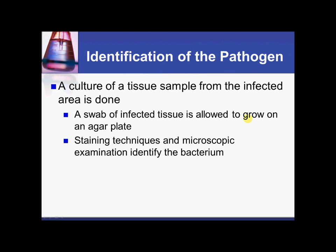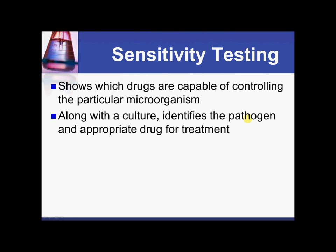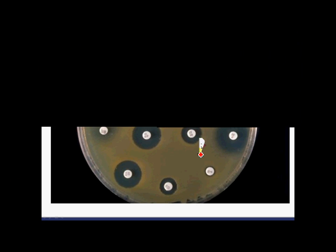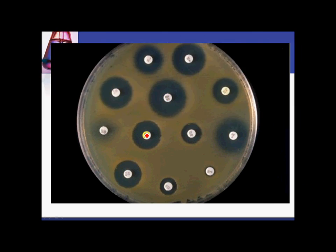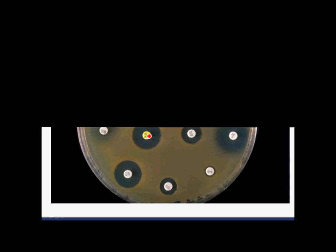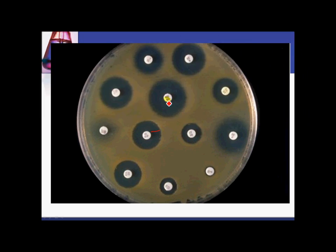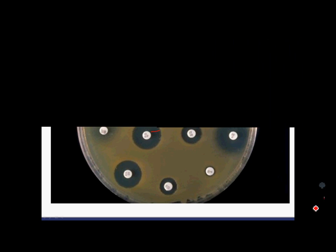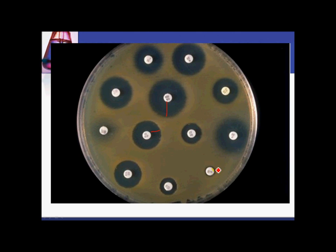Here's a picture of what a culture sensitivity test looks like in the lab. These small discs are actually antibiotics, and you can see markings on the discs. Where you see inhibition of bacterial growth around a disc, that antibiotic would be a good choice to prescribe. Where there is no inhibition zone around a disc, that antibiotic would not be a good choice, as it is not inhibiting the growth of the bacteria.